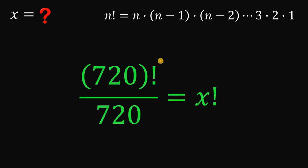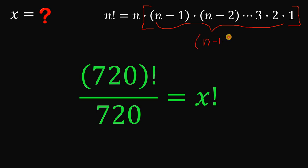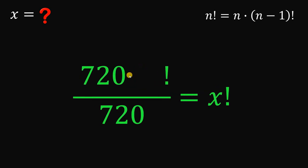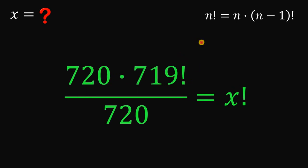Now, another definition of n factorial is: n factorial equals n times n minus 1 factorial. Using this, the numerator 720 factorial can be written as 720 times 719 factorial. We can then cancel out 720 on the numerator and denominator.